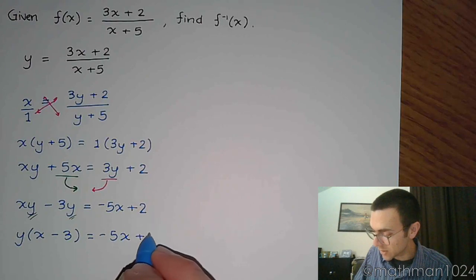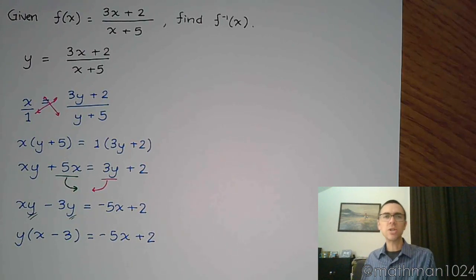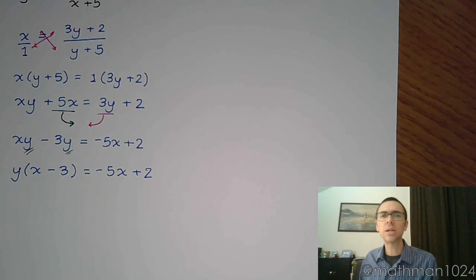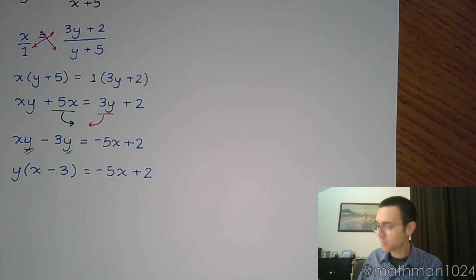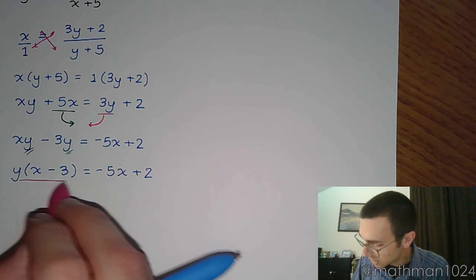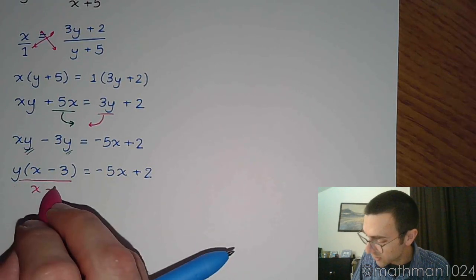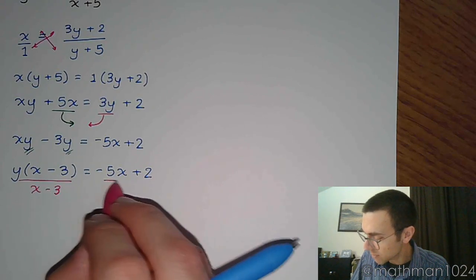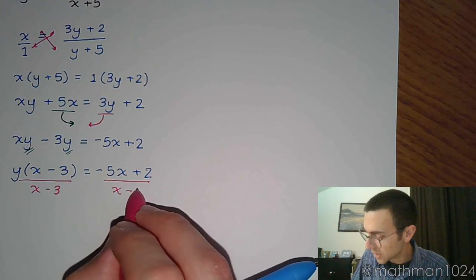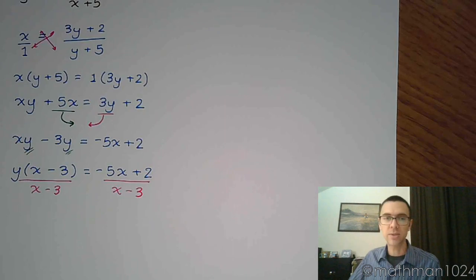Now, what's really neat about this is that you go from having y in two different spots to having just one instance of y. Which makes it really easy to finish solving this for y, because to get y by itself, you need to get rid of this factor of x - 3. So divide both sides by x - 3, like this.